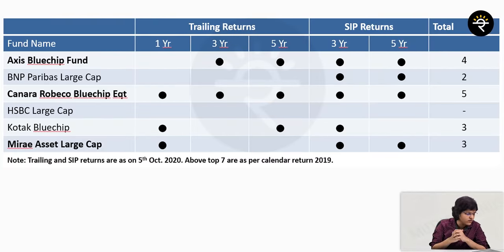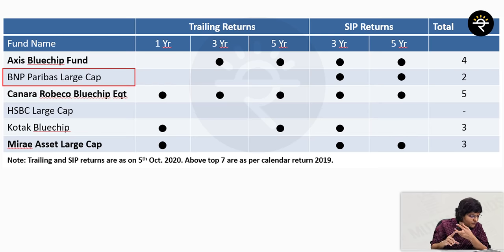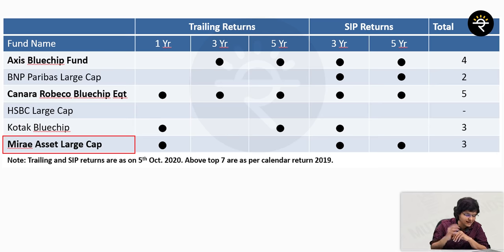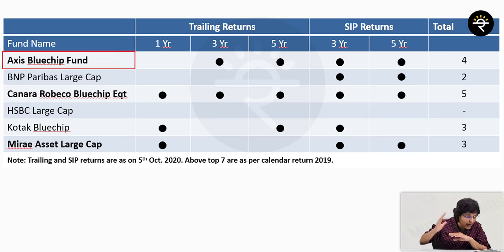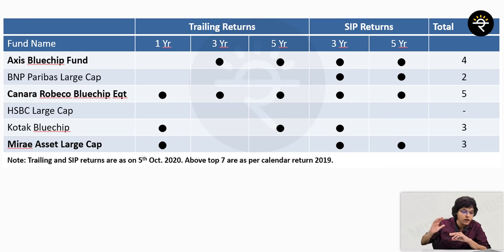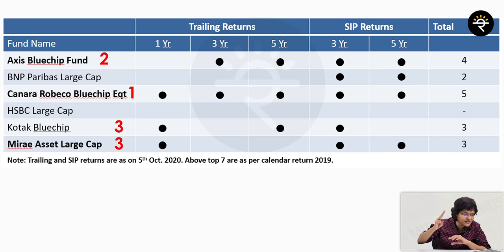Now that you have understood the different types of returns, let's look at this table. There are 6 funds listed in the large cap category: Axis Blue Chip, BNP Paribas, Canara Robeco, HSBC, Kotak Blue Chip and Mirae Asset Large Cap. You will understand how many points every fund is getting based on trailing returns and SIP returns — out of 5. Canara Robeco is getting 5 out of 5, Axis Blue Chip is getting 4 out of 5, and Mirae Asset and Kotak Blue Chip are also doing well. Based on trailing and SIP return, Canara Robeco is No. 1, Axis Blue Chip is No. 2, and Mirae Asset and Kotak Blue Chip are at third position.